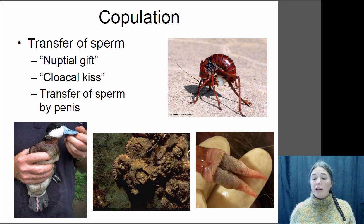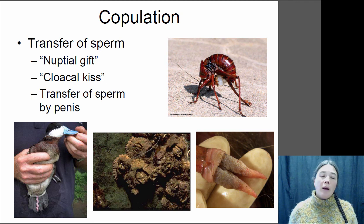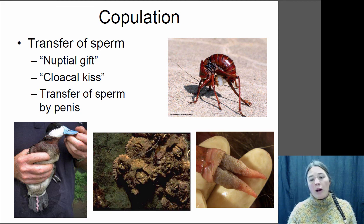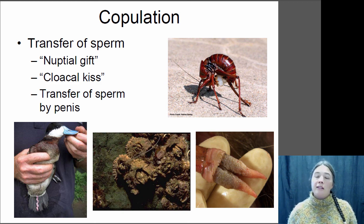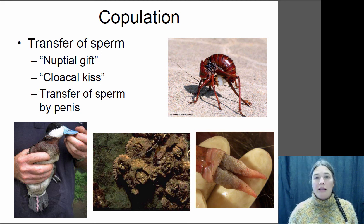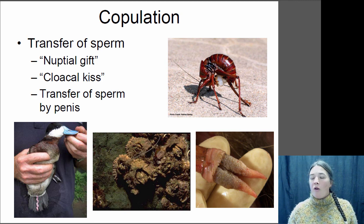Some animals have very interesting shaped penises. This is a possum penis here. Female possums have two uteruses, each with their own ovary. So if you're a male possum and you want to fertilize the eggs in both uteruses, you need a forked penis so that you can simultaneously inseminate both uteruses at the same time — and so that's indeed what they have. So there are some interesting reproductive systems. Hopefully I didn't freak you out too much, and I'll catch you guys next time.